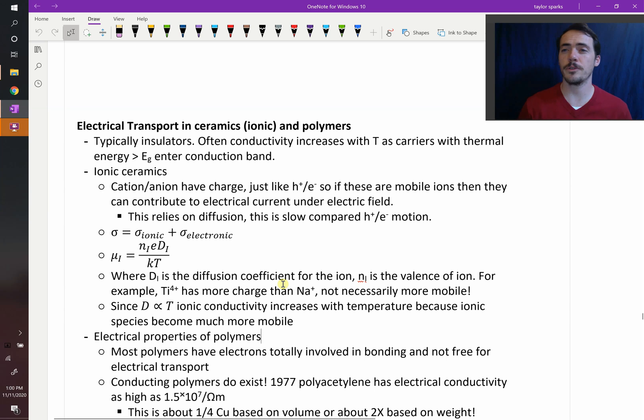All right, let's talk about electrical transport in ceramics, ionic materials, and polymers. Typically both of these are insulators. If you have a dinner plate or a piece of plastic, usually these things are not going to conduct electricity very well because they don't have free carriers. Their electrons are tied up in strong bonds for the most part, and so they're not going to be good conductors of electricity.